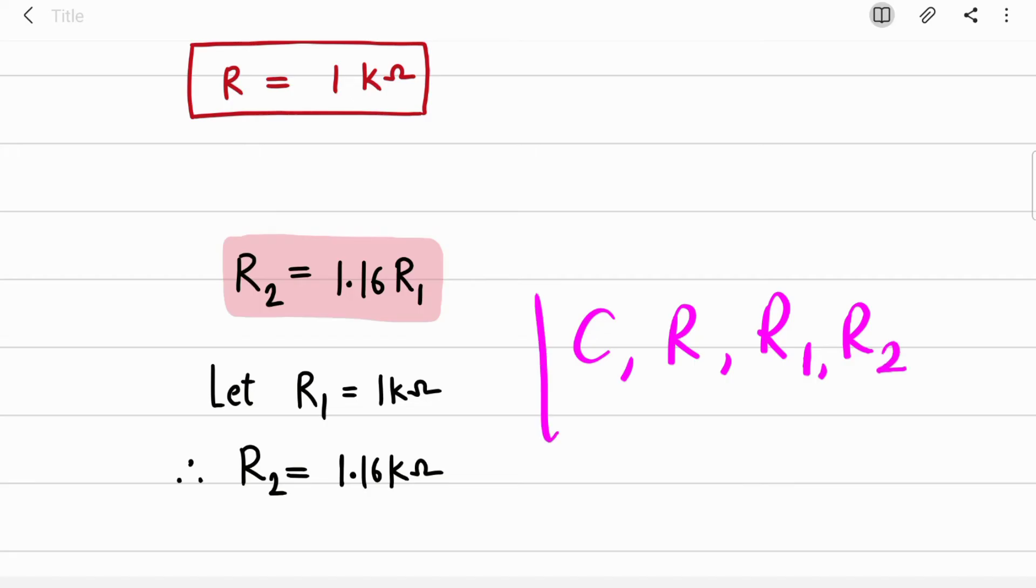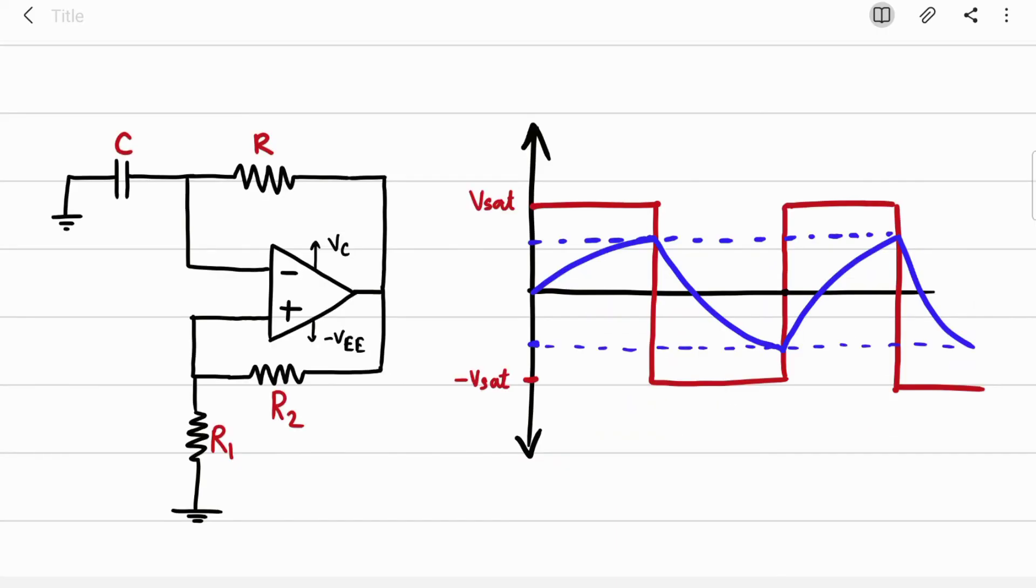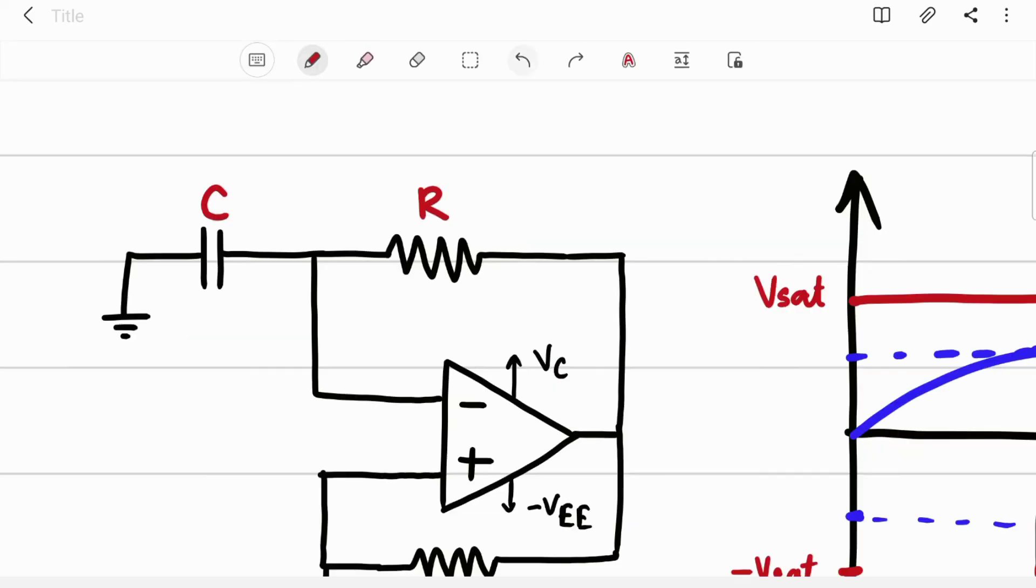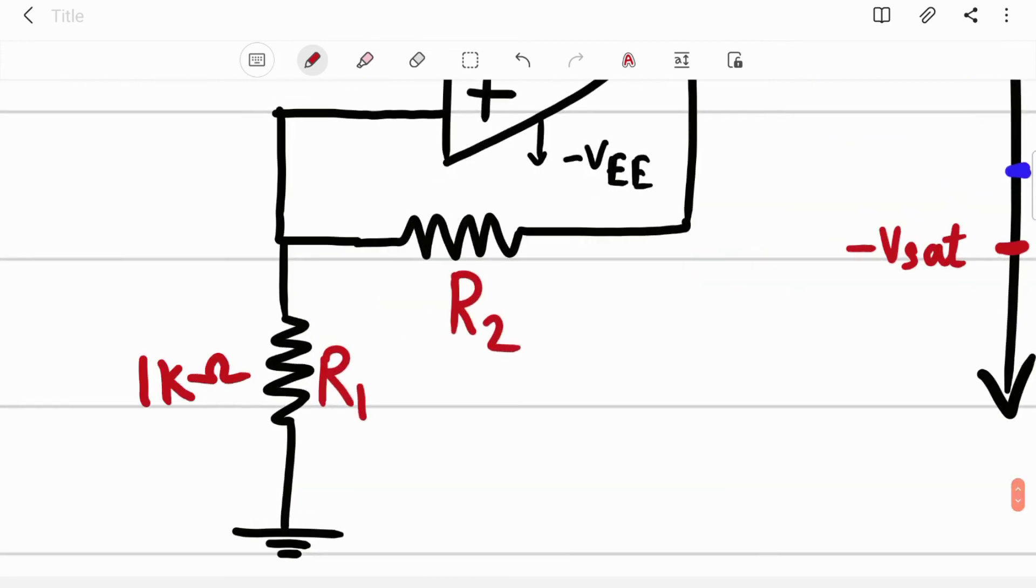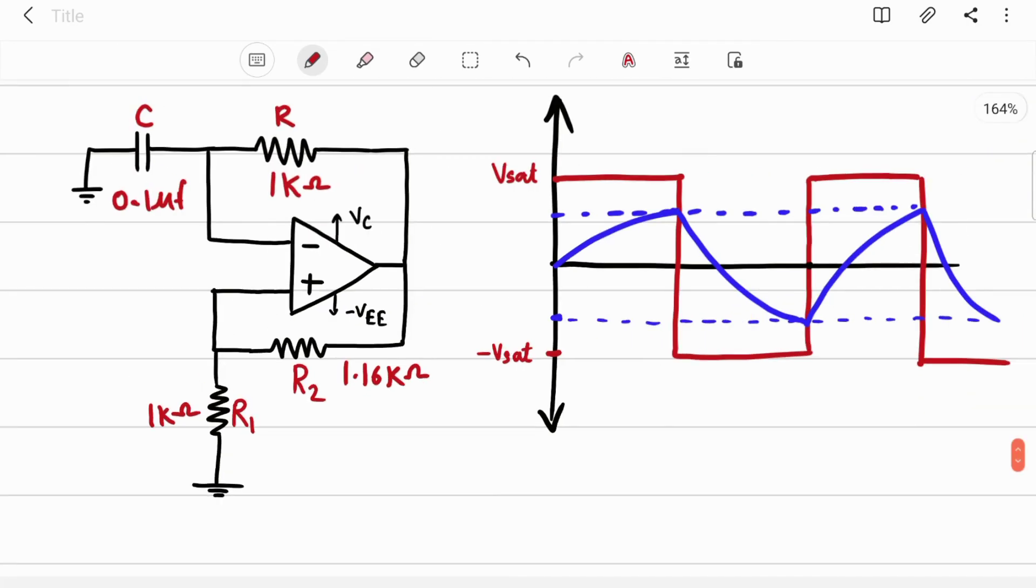You calculated all four components and that's nothing but designing a stable multivibrator. So the last step is you need to draw the diagram and you need to write down the calculated values. So C is 0.1 microfarad, R is 1 kΩ, then R1 is 1 kΩ and R2 is 1.16 kΩ.